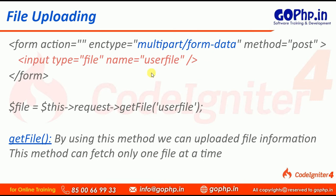Once a file is uploaded we have to get the file information. In our request object we have a method called getFile(). By using this getFile() method we can get the complete information of the uploaded file. This method can fetch only one file at a time. If you want to get multiple files there is a separate method that we will discuss in a separate session on multiple file uploading.